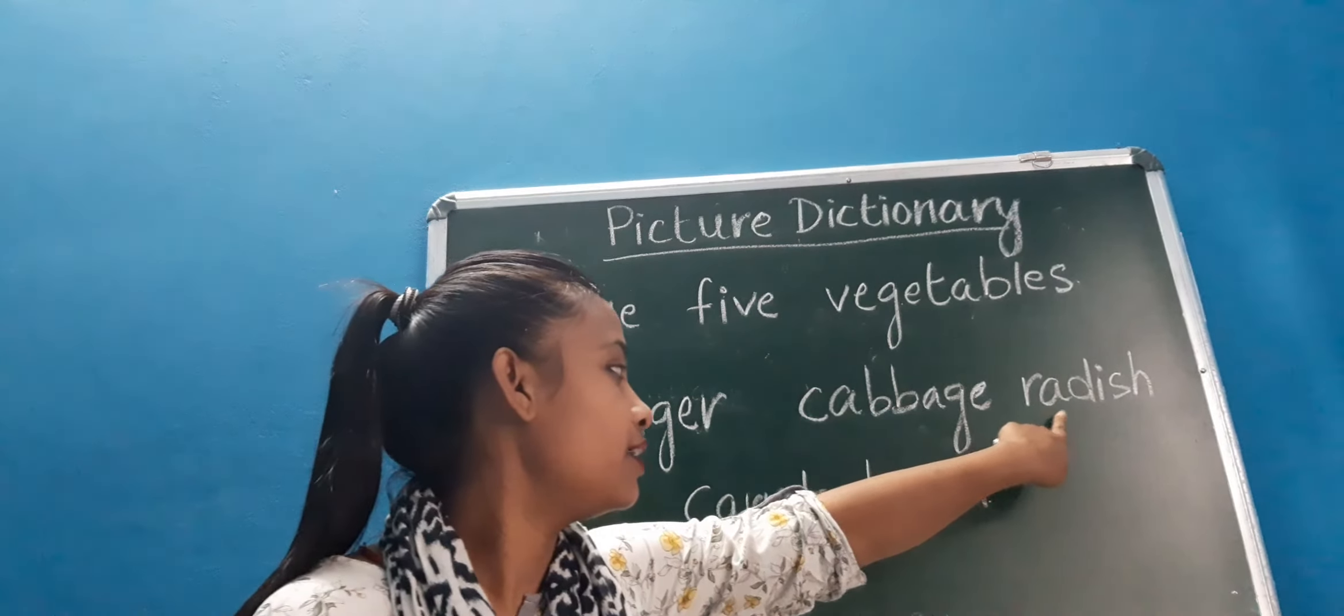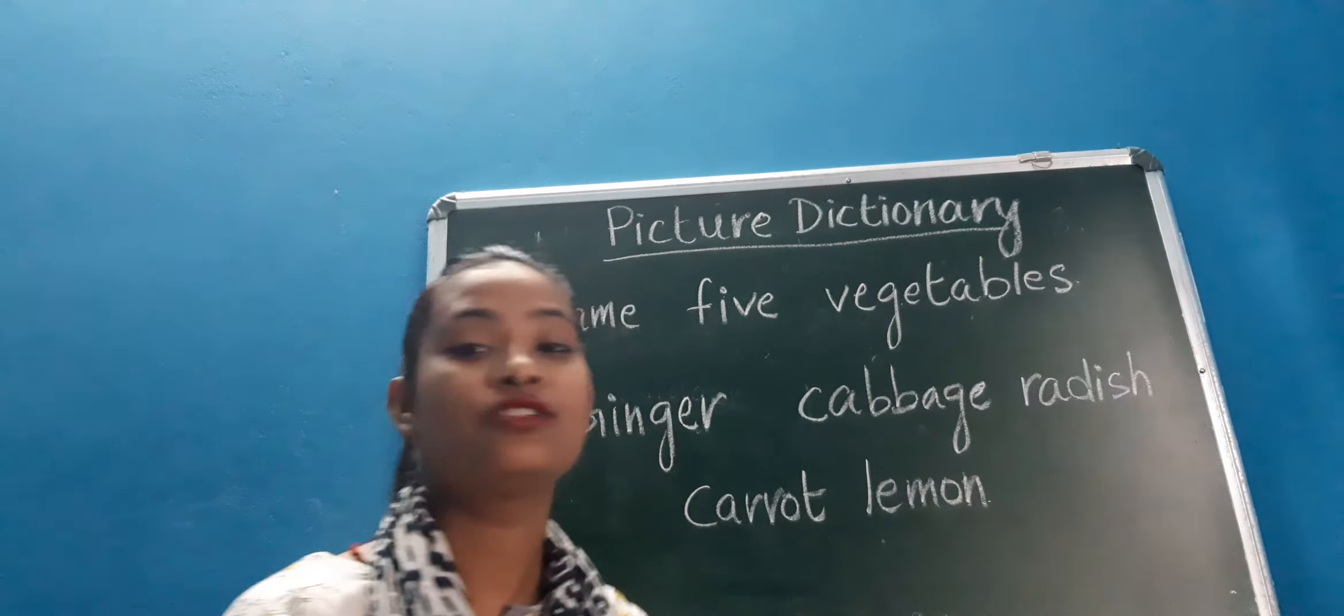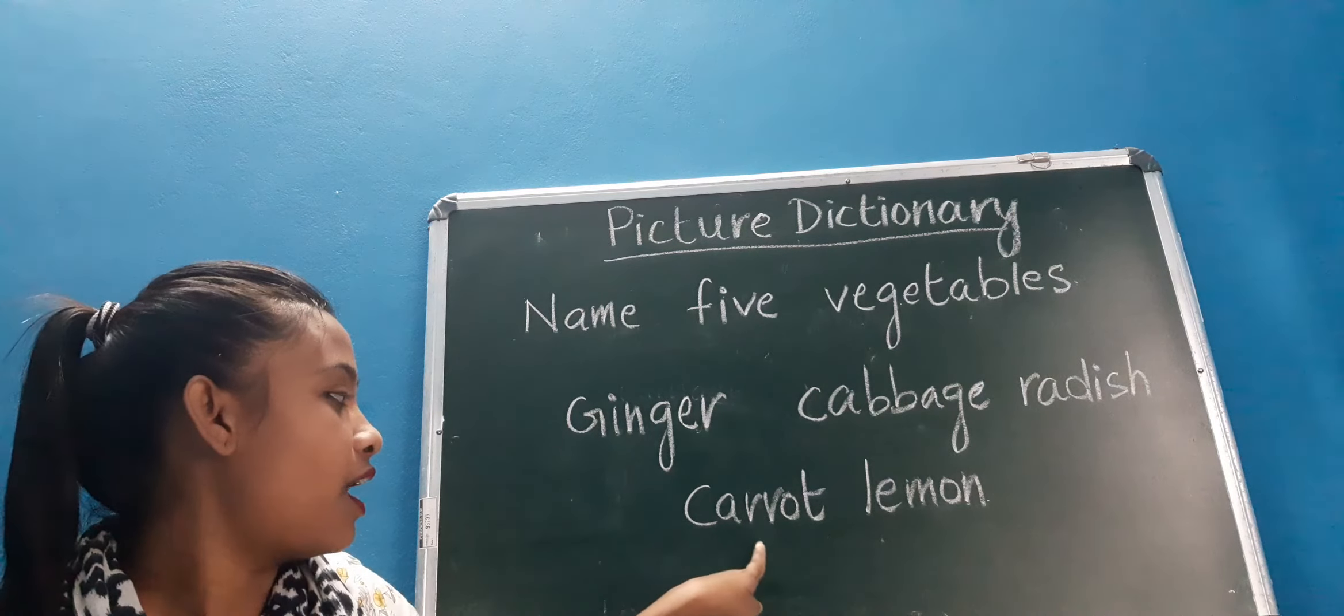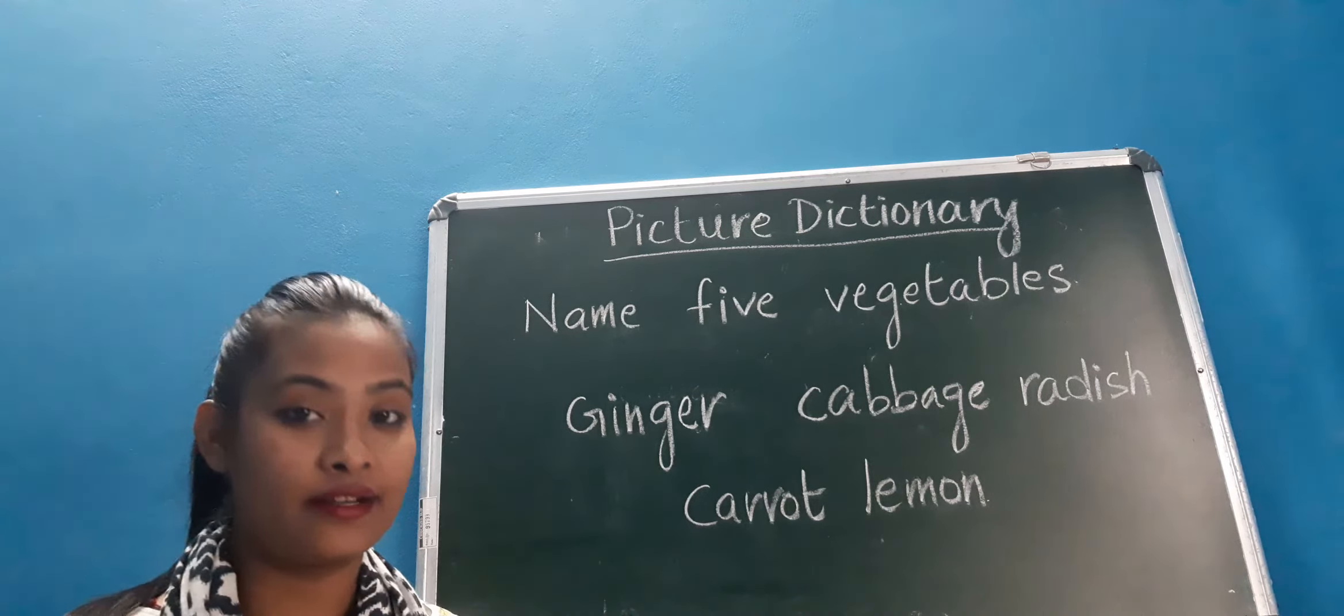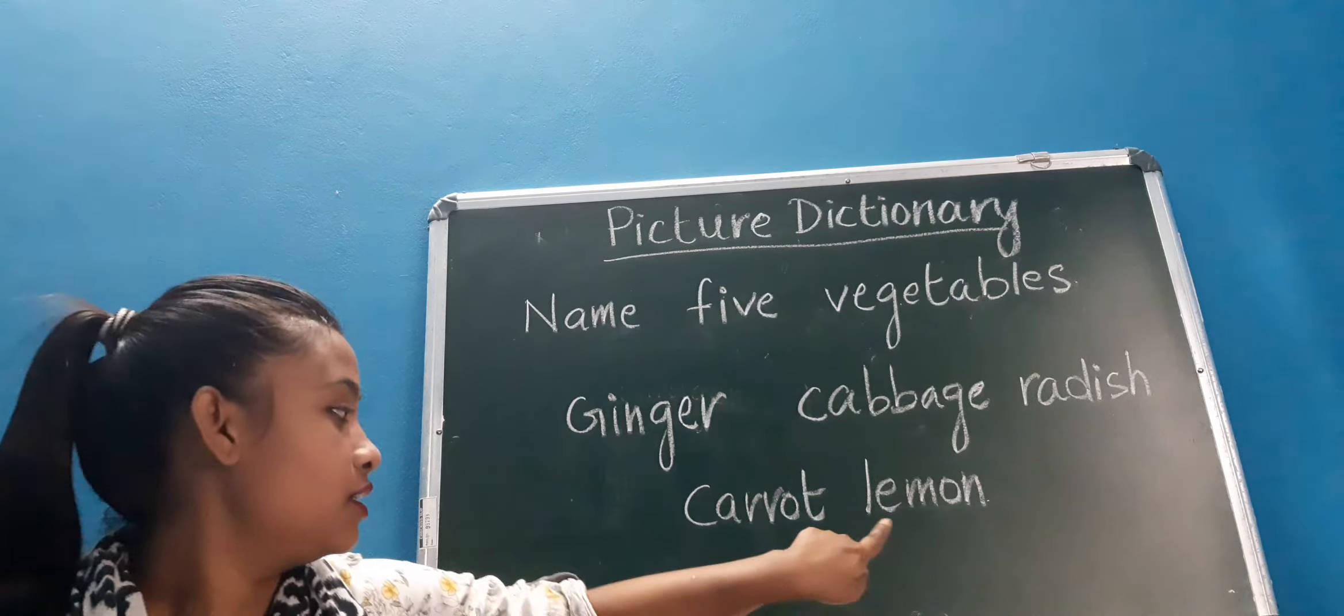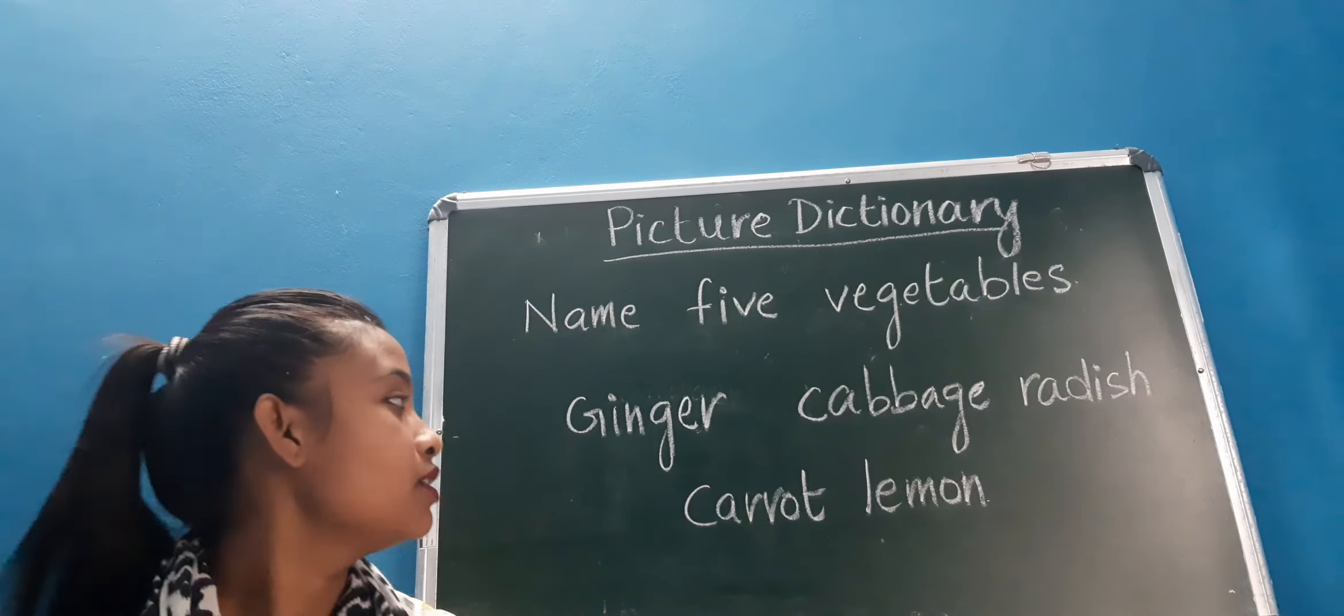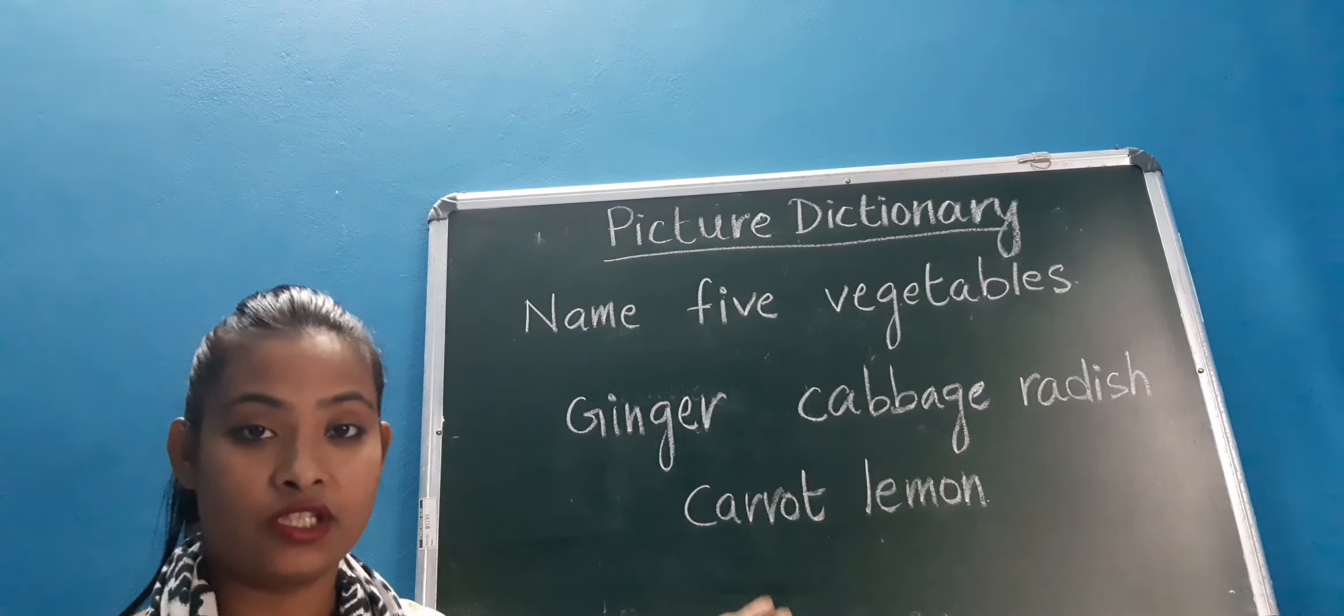Next is radish. R A D I S H, radish. Next is carrot. C A R R O T, carrot. Next is lemon. L E M O N, lemon. So these are the five names of vegetables.